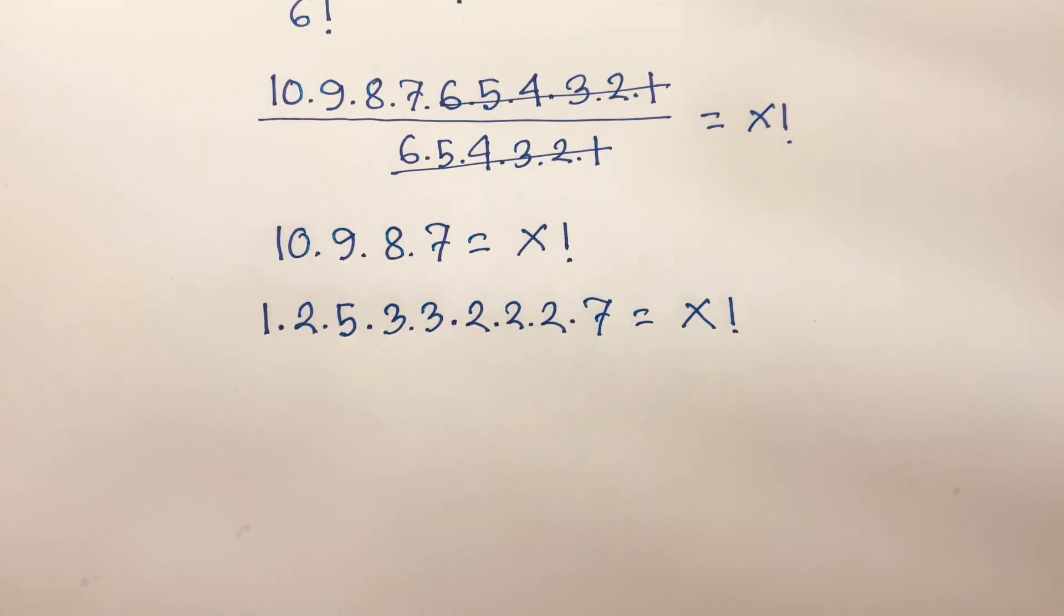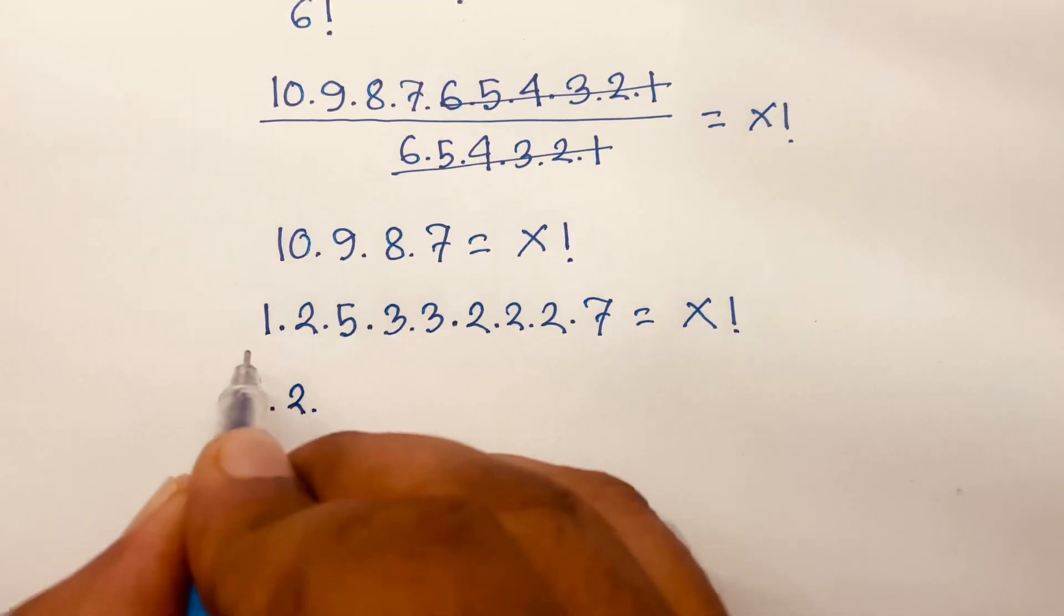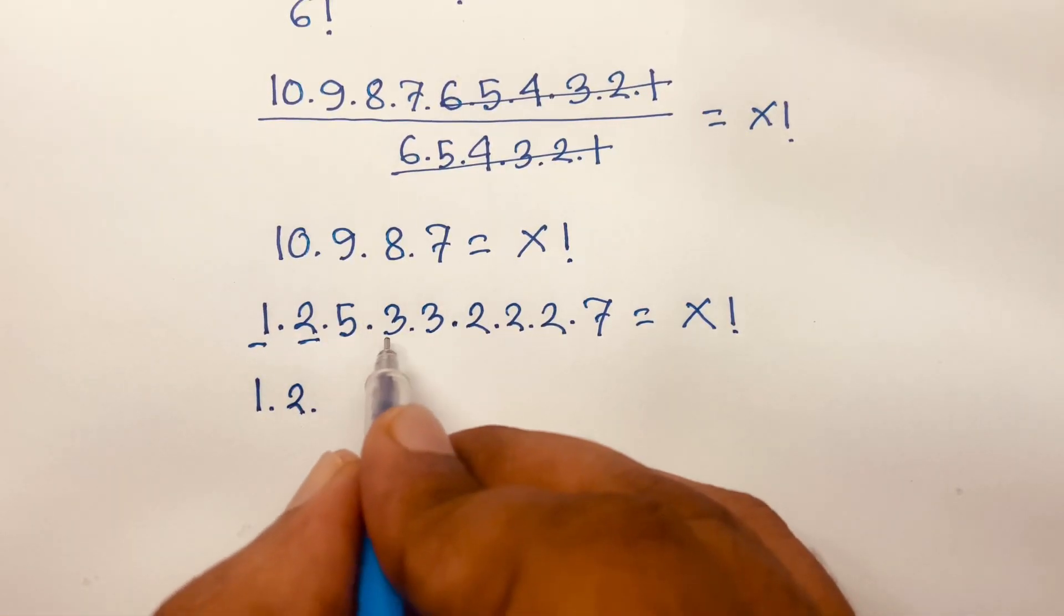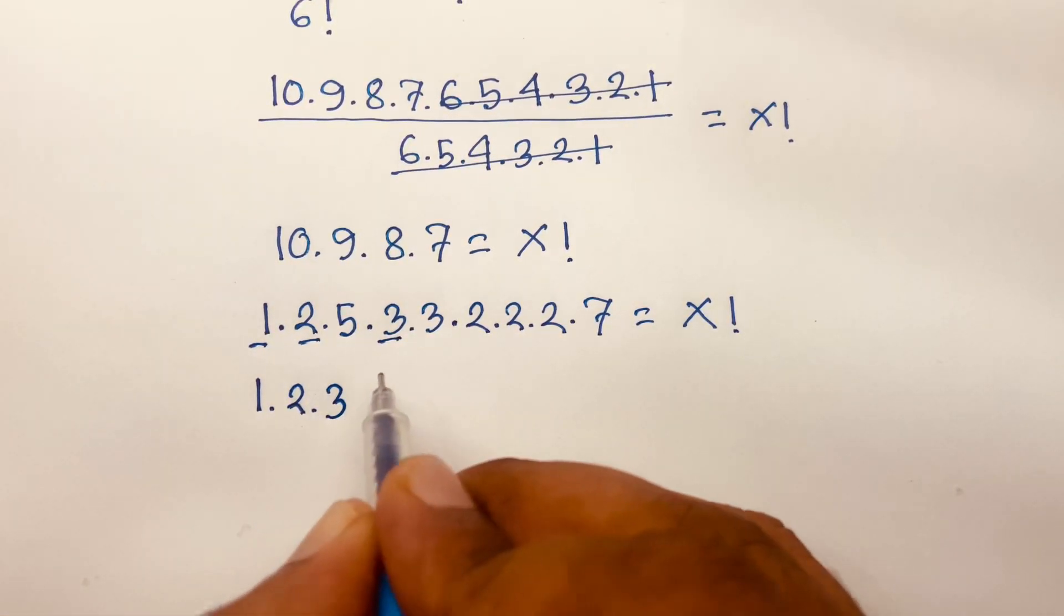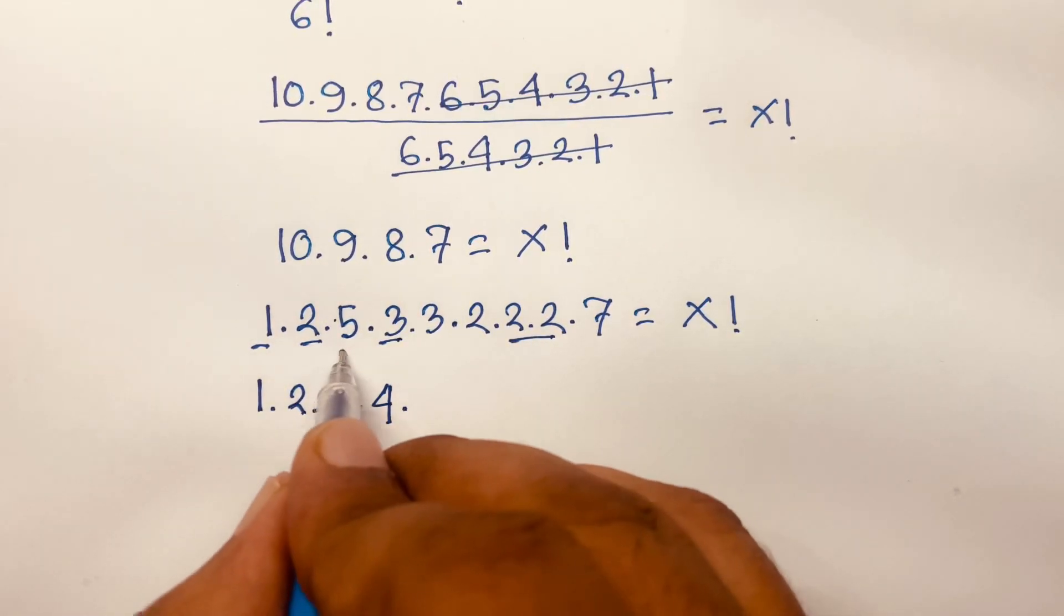Then I can see easily here is 1 and this is 2. And now this is 3. And now I can say 2 times 2 equals 4. And this is 5.